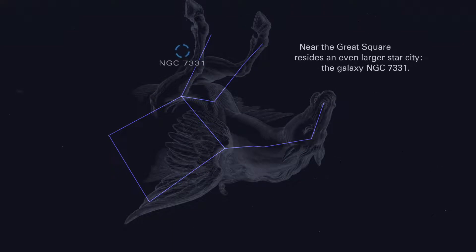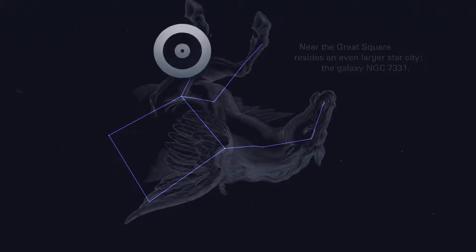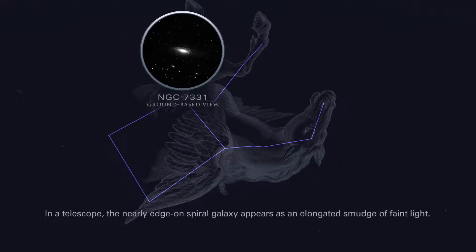Near the great square resides an even larger star city, the galaxy NGC 7331. In a telescope, the nearly edge-on spiral galaxy appears as an elongated smudge of faint light.